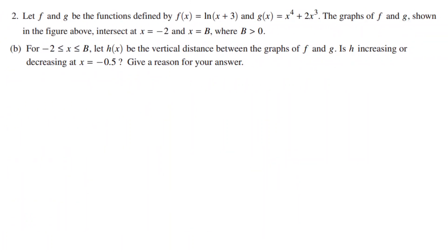On to part b. For -2 less than or equal to x less than or equal to b, let h(x) be the vertical distance between the graphs of f and g. Is h increasing or decreasing at x equals -0.5? Give a reason for your answer.